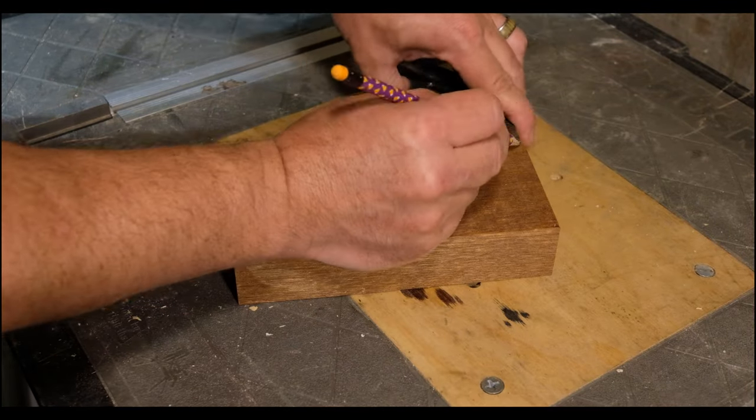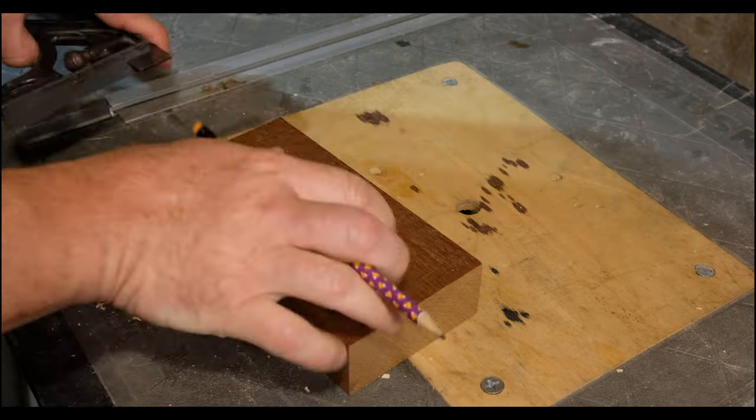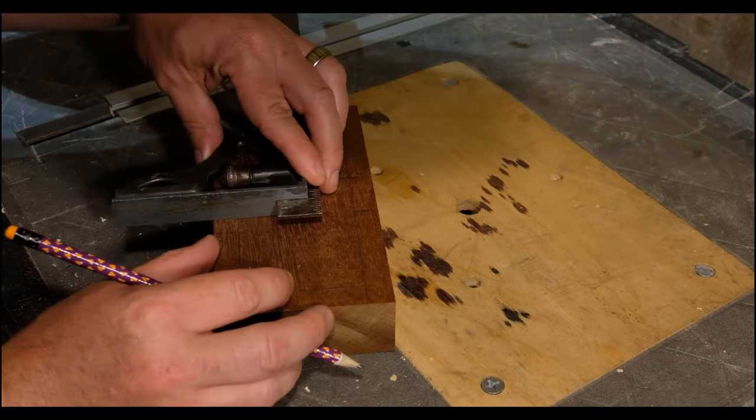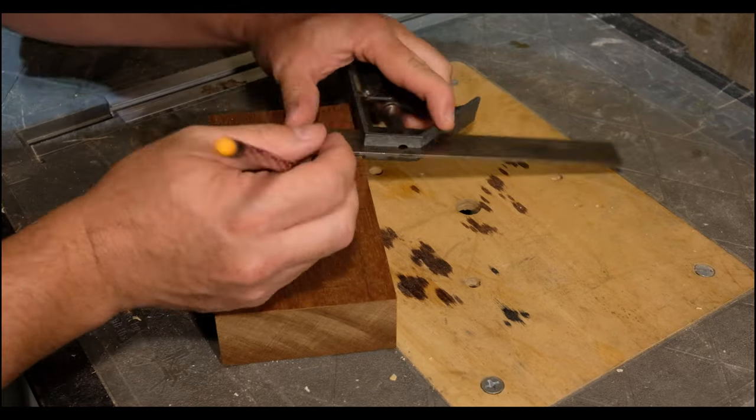Next I cut out the cavities for the steel shot to create the dead blow function. The size of these cavities doesn't super matter. I left half an inch around the outside edges and enough room for the handle plus an inch in between them.